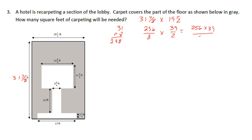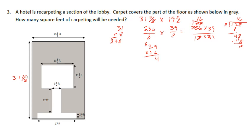Rewriting as a fraction: 256 times 39 over 8 times 2. 2 goes into 2 one time, 2 goes into 256 giving 128. Then 8 goes into 8 one time, 8 goes into 128 sixteen times. That leaves 39 times 16. 39 times 16: placeholder calculation gives 624. The total area is 624 feet squared.